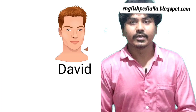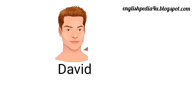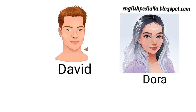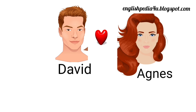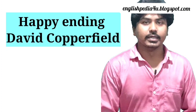David ultimately finds fame and fortune as an author writing fiction. Coming to the end of the novel, we see that Dora, David's wife, falls ill and dies. David leaves the country to travel abroad. His love for Agnes grows when he returns. He and Agnes — who has long possessed a secret love for him — get married and have several children. David pursues a writing career with increasing commercial success. This is how the novel David Copperfield ends.